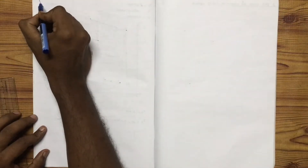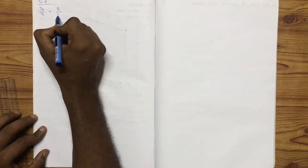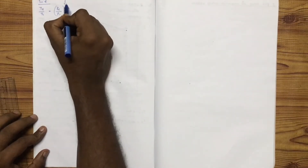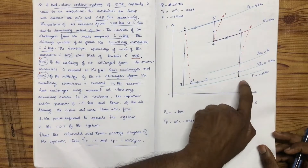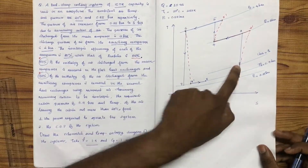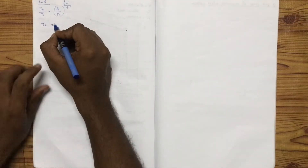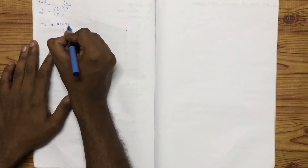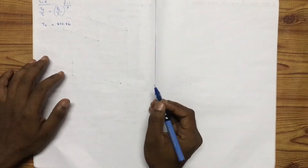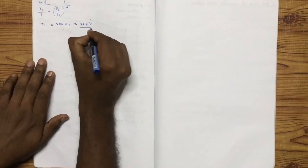For the isentropic process 1 to 2: T2 by T1 is equal to P2 by P1, the whole raised to gamma minus 1 by gamma. We have P1, P2, and T1 values.